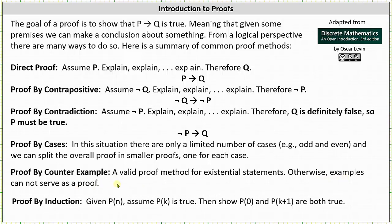And finally, in an earlier section we talked about proof by induction. For proof by induction we are given p of n, and we assume p of k is true, then we show p of 0 and p of (k+1) are both true.